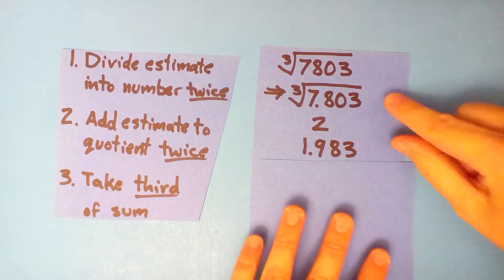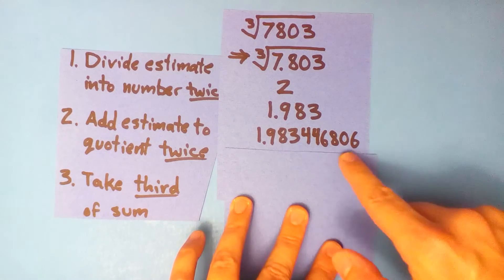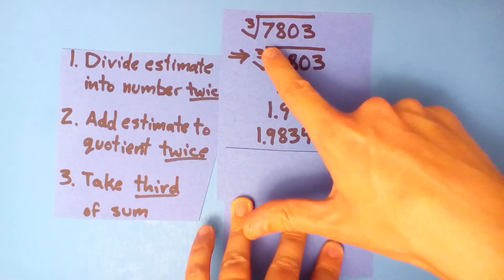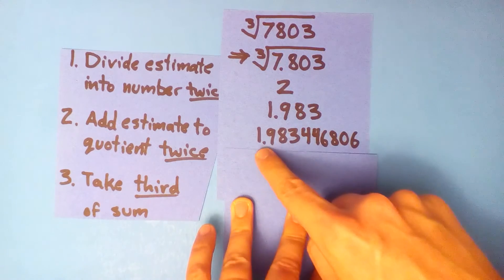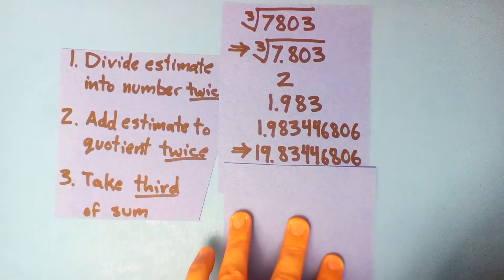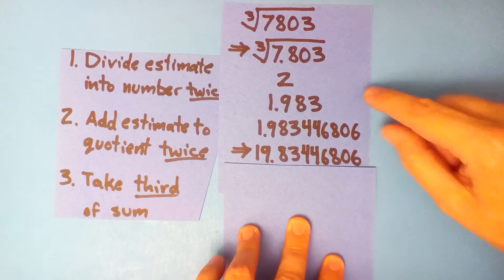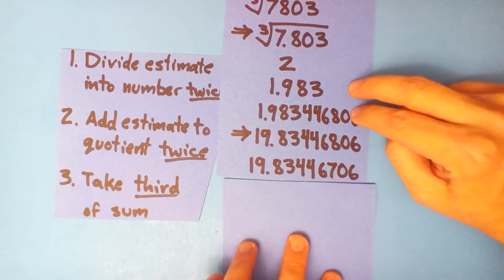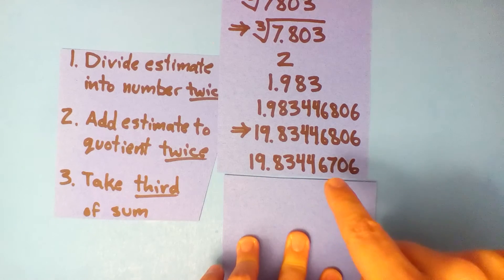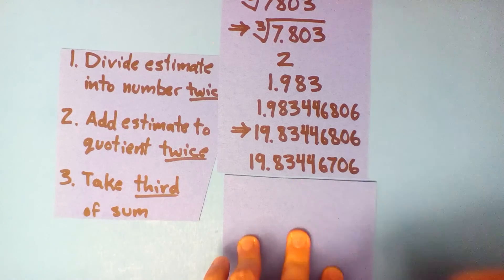Repeat this process and see if you can improve on 1.983. Your next improvement should be 1.983446806. But remember, we took the cube root of 7.803 — we actually want the cube root of 7803. So move the decimal point back one space: our calculation gives 19.83446806. The actual cube root using a calculator is 19.83446706 — so we were one millionth off. Still very good, but not perfect.